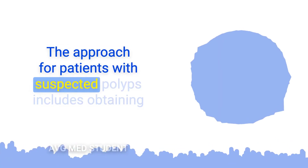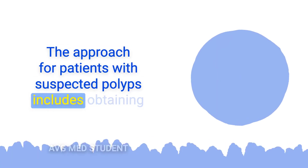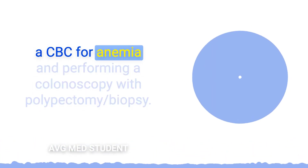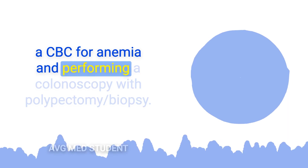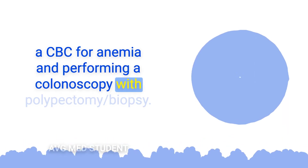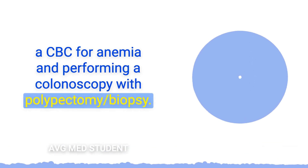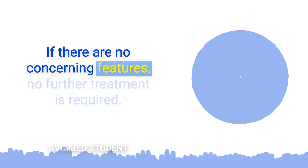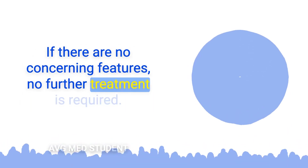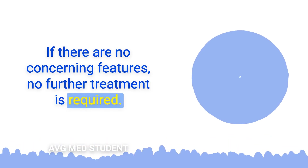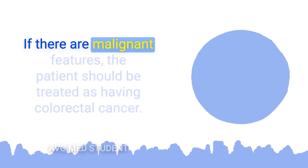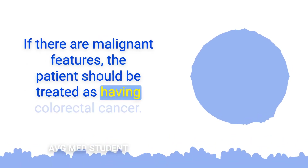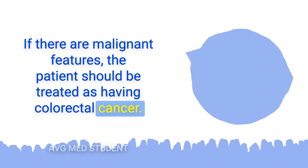The approach for patients with suspected polyps includes obtaining a CBC for anemia and performing a colonoscopy with polypectomy biopsy. If there are no concerning features, no further treatment is required. If there are malignant features, the patient should be treated as having colorectal cancer.